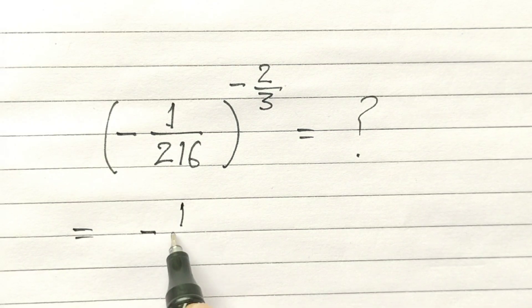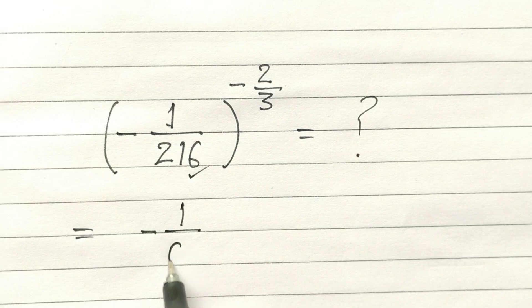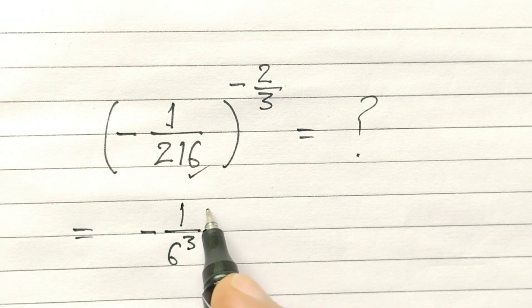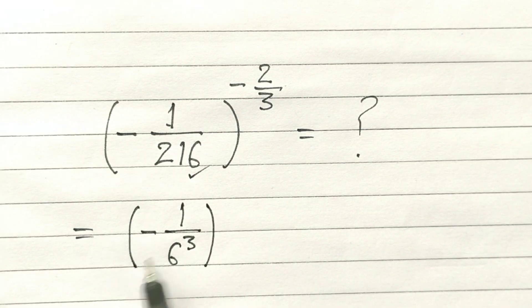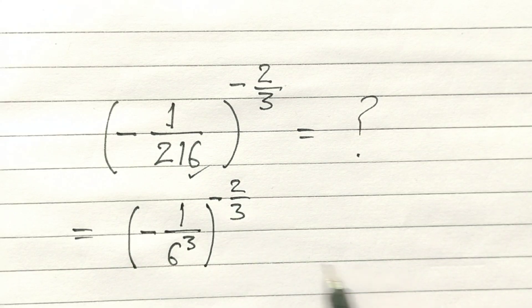Minus 1 over 216 can be written as (-1/6^3) to the power minus 2 by 3.